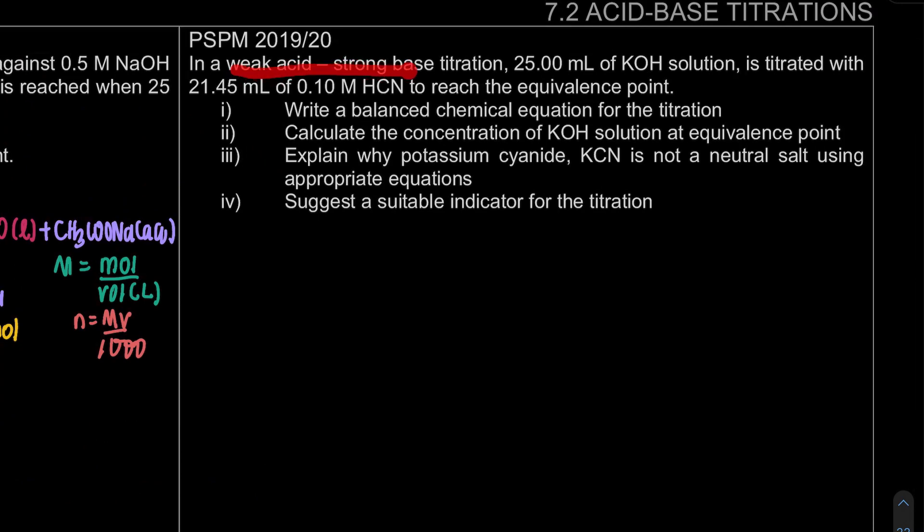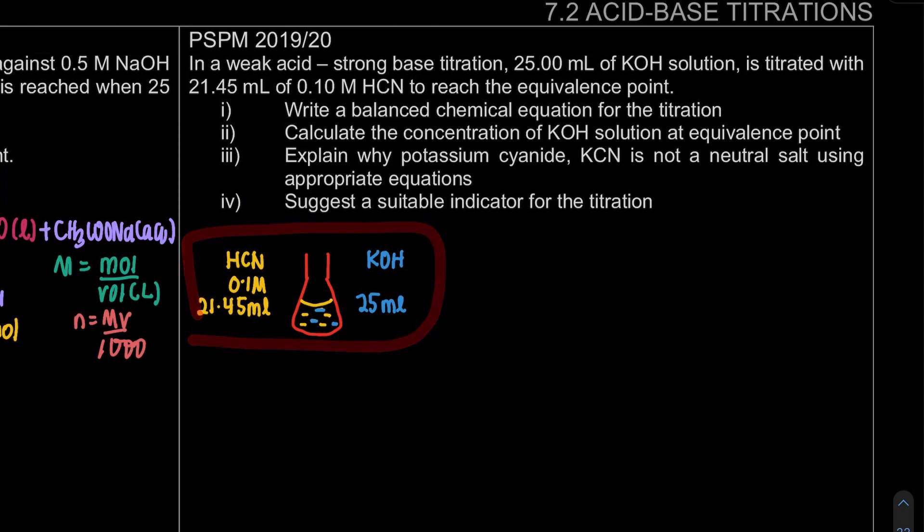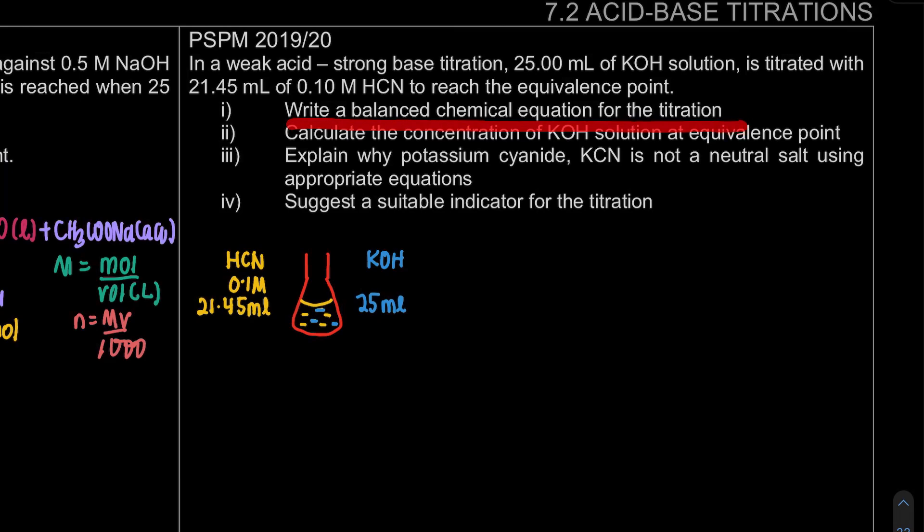So let's look here. In a weak acid strong base titration, 25 mL of KOH, potassium hydroxide solution, is titrated with 21.45 mL of 0.1 M HCN to reach the equivalence point. Question number one, write a balanced chemical equation for the titration.